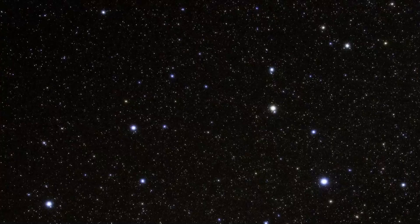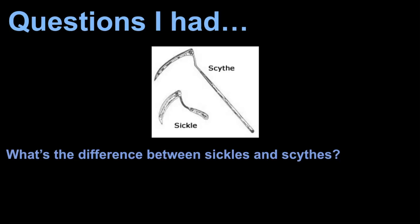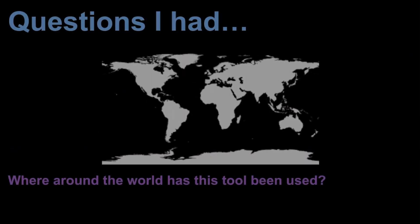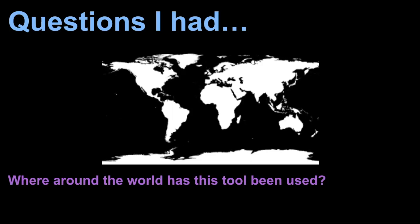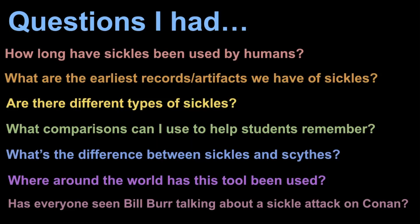If any of those connections helps them remember the star pattern, I'm all for it. So what do you see when you look at the sickle — what does it make you think of? I always superimpose the shape of that tool over the star pattern. Regarding the difference between a sickle and a scythe: a scythe is a bigger tool to cut over a larger area, while a sickle is a smaller handheld tool. As for where around the world this tool has been used — pretty much everywhere. There are records throughout Asia, Africa, and the Americas, so it's a very important tool. And if you haven't seen the Bill Burr clip talking about a sickle, I'll leave the link in the description below — thanks for following me on that random thought process.